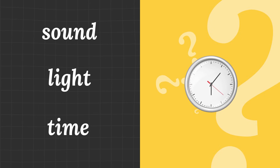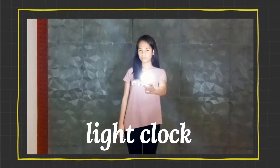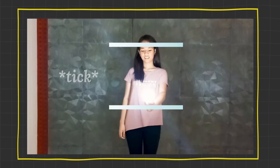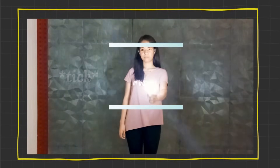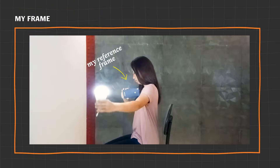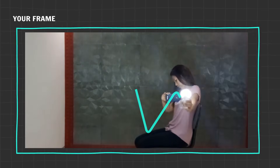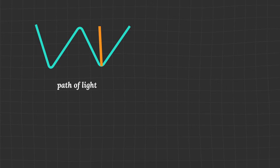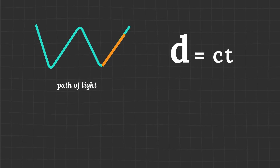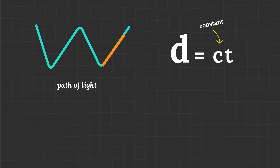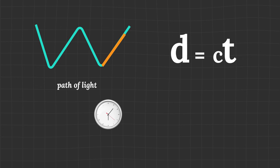Ever heard of time being relative? Consider a light clock with two mirrors and a photon bouncing between them. Every time the photon hits the bottom mirror, it's one tick of time. So when I start moving, I see it travel in vertical lines. But from your stationary frame, it travels in Vs. Since the photon has to travel a longer distance and the speed of light is constant, each tick takes longer relative to you. So moving clocks run slower.